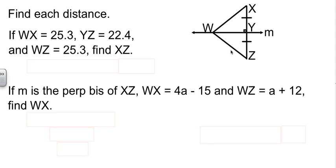Since WX is the same as WZ, that tells me line M is the perpendicular bisector, which we already have marked. So if this part is 22.4, then so is XY. So XZ would be the sum of those two, 22.4 plus 22.4, or 44.8 in total.